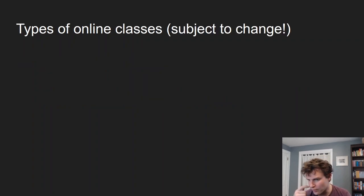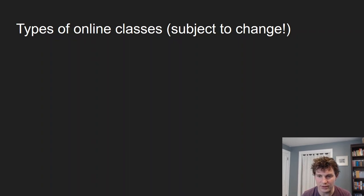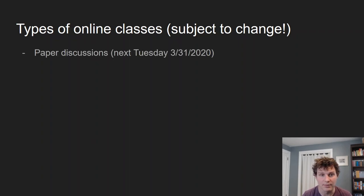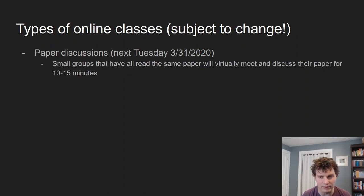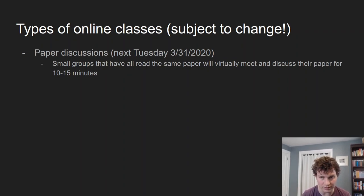I want to go over the way we're going to handle class from now on. This is obviously going to be a bit of an experiment, so this could change over time. We're going to have paper discussions still. Those will be the only ones where it'll be a lot easier if you can make it to the actual class time. Different people will be assigned different papers, they'll meet up in a small group virtually on Zoom or Google Meet and discuss their paper for 10 to 15 minutes during class time.